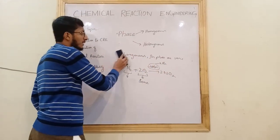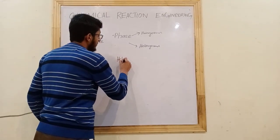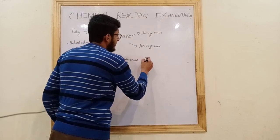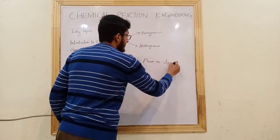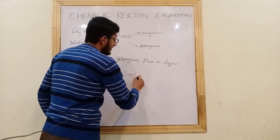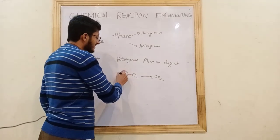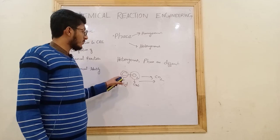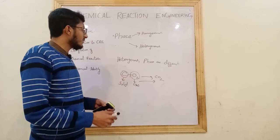In a heterogeneous phase, the phases of reactants are different. For example, carbon plus oxygen changes into CO2. Here, carbon (coal) is a solid and oxygen is a gas — they are in different phases — and they convert into CO2. This is a heterogeneous reaction.